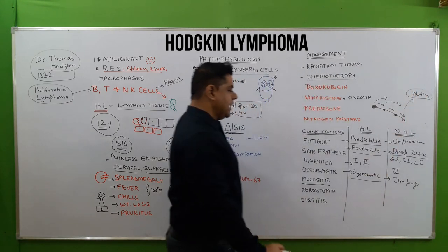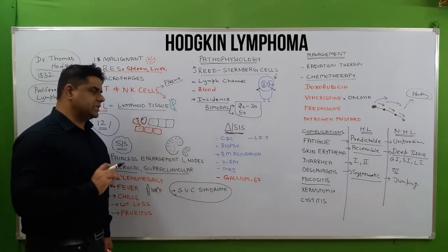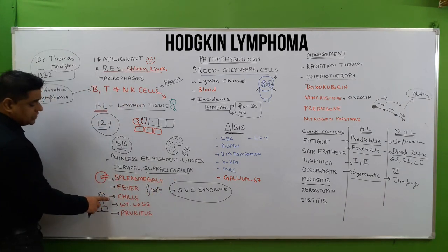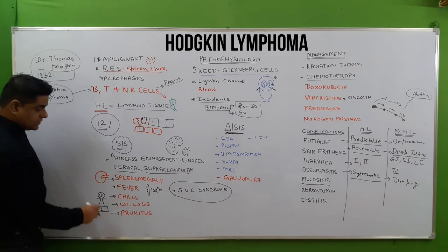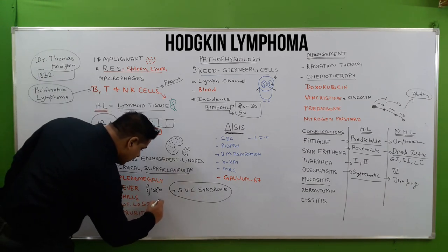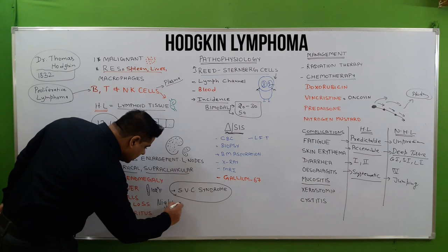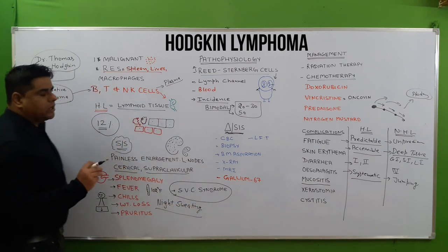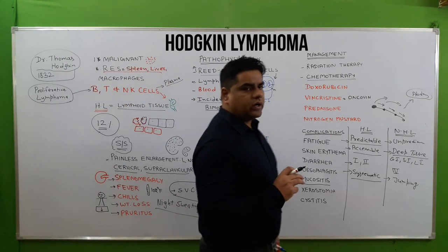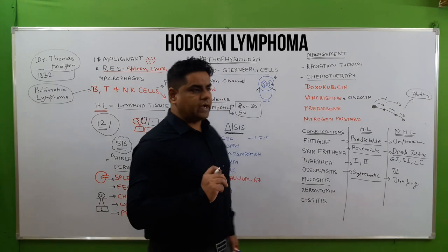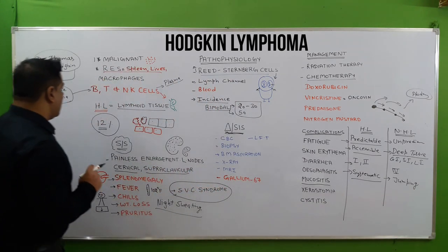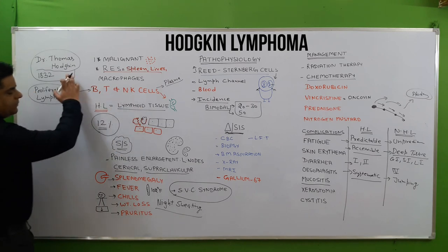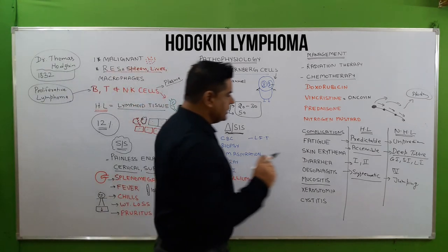Hodgkin's lymphoma spreads in a systematic sequential manner through lymph nodes. Non-Hodgkin's lymphoma is a jumping type — it can start in the clavicular region and reach the abdominal region directly. Additional features of Hodgkin's lymphoma include the presence of fever and night sweating, which are not present in non-Hodgkin's lymphoma.